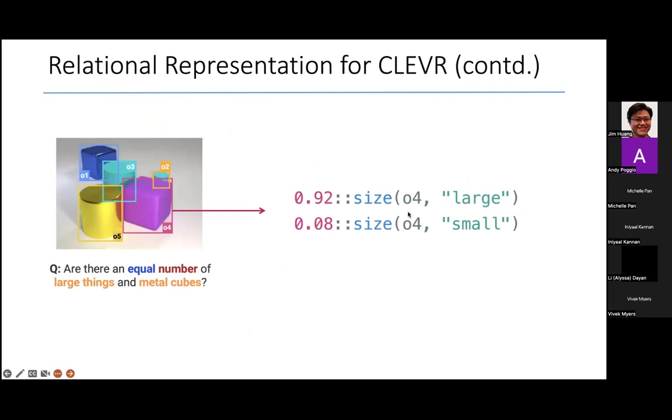For example, we don't know for certain that the object O4 is large, but we know with probability 0.92 that it is large, but we also believe that with probability 0.08 that it is small.